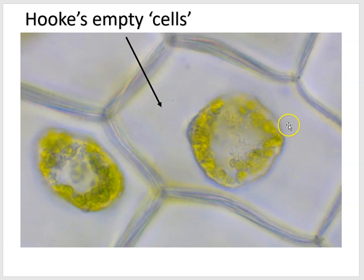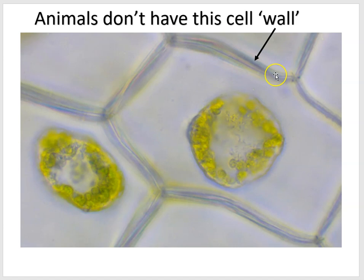Animal cells don't have these rigid cell walls — animal cells just have the cell membrane. All cells on Earth have a cell membrane. Plant cells also have a cell wall.